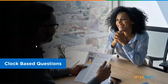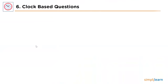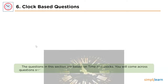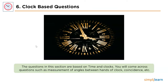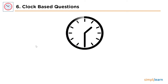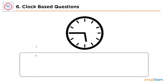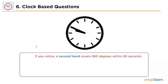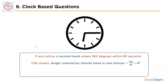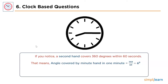The next topic is clocks. The questions in this section are based on time and clocks — measuring angles between hands, coincidence between hands, time when a particular angle is given, time lost in a false watch, etc. In a watch, the second hand covers 360 degrees within 60 seconds. A minute hand covers 360 ÷ 60 = 6 degrees per minute.